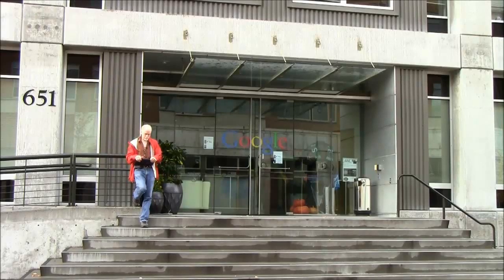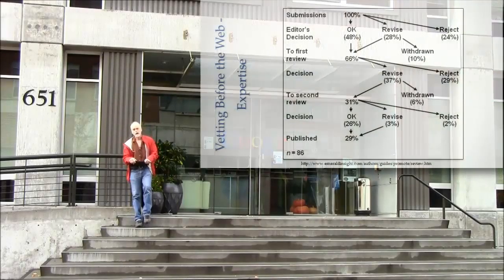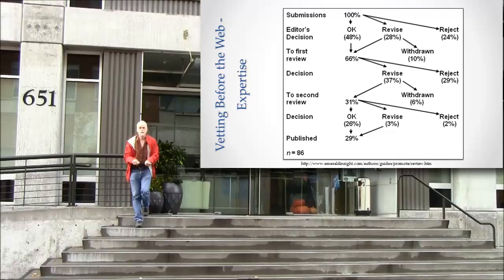Now we're going to look at the old system of authority granting, specifically for published information. When I say published information, I mean information that's publicly available, like newspapers, books, magazines, etc., before the web.